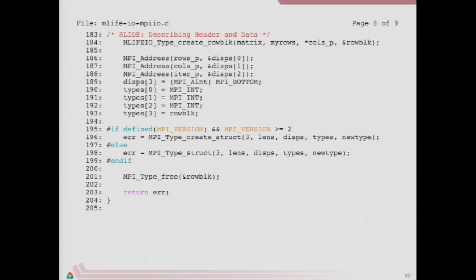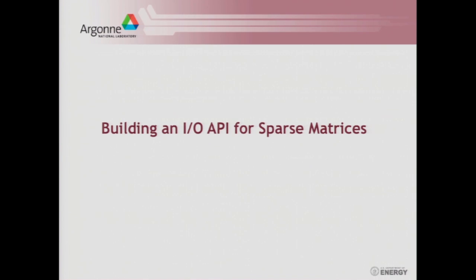We're not going to talk about building an I/O API for sparse matrices — the slides are in the PDF and there's code for this CSR version in the example code if you're interested. It's a complicated example but has a nice demonstration of how to deal with variable amounts of data from different processes. We'll talk about that later today anyway, so we're going to skip over it.